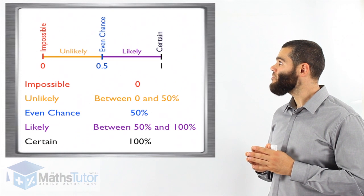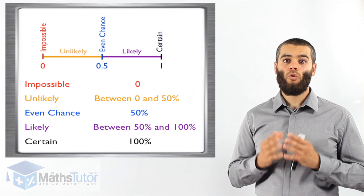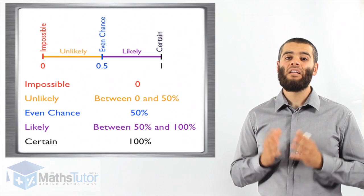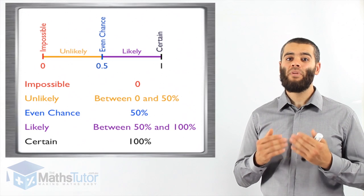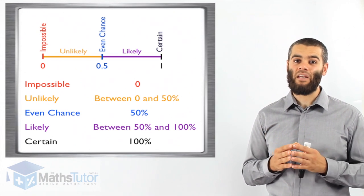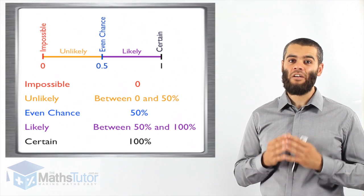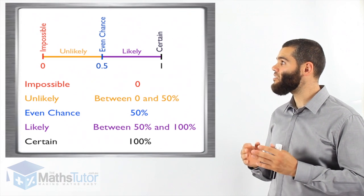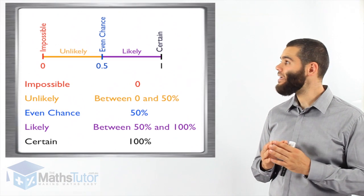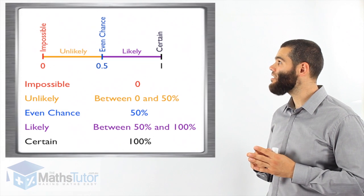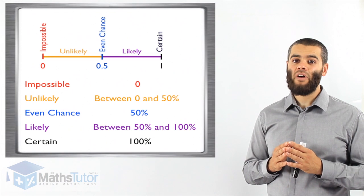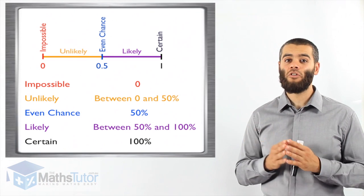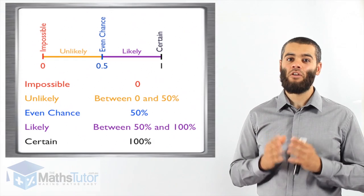Then we have above fifty percent, all the way to certain. Between fifty percent and a hundred percent, we call that likely. Likely meaning it has a high chance of happening. A high probability of happening. It's very important that we understand this scale. It starts from zero, impossible. It goes up unlikely all the way to even chance. And then it goes up likely of a chance or of an event happening, meaning up to a hundred percent certain where it is certain that that event will occur.